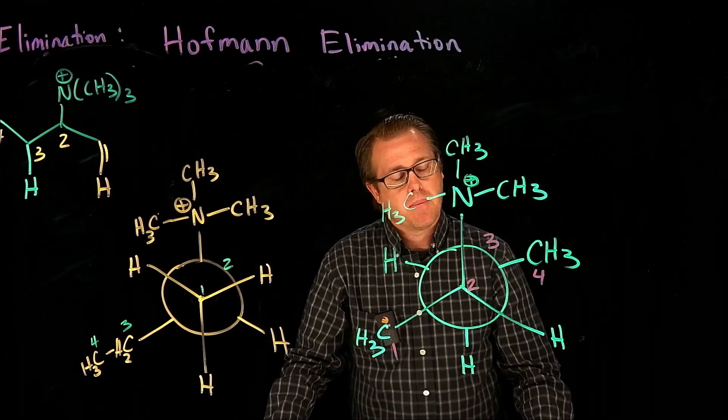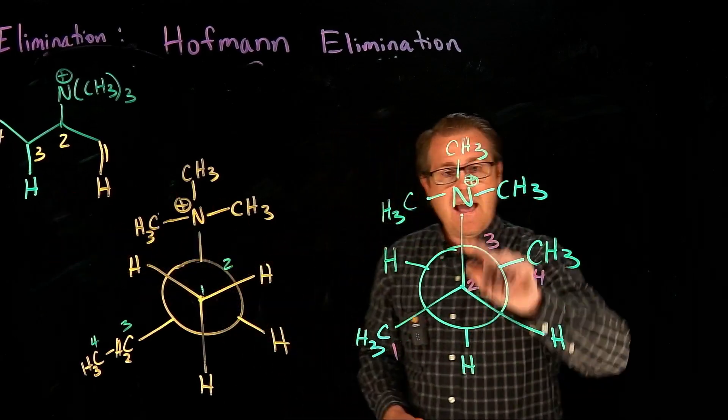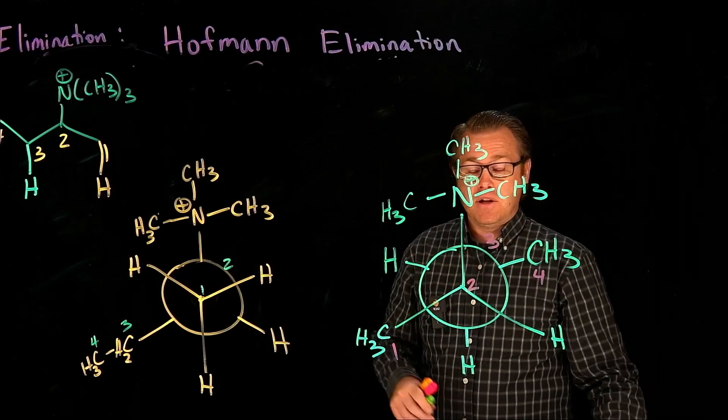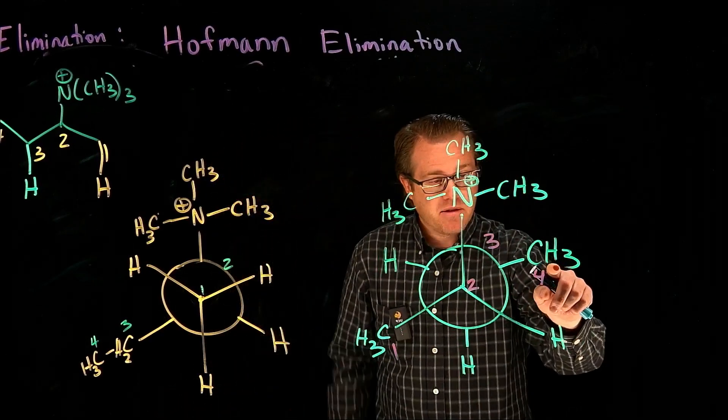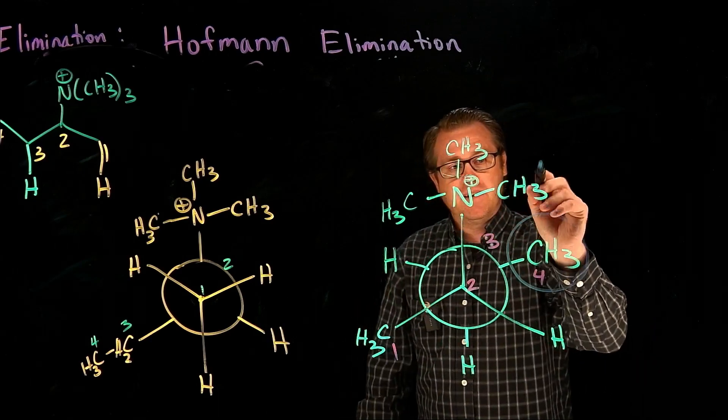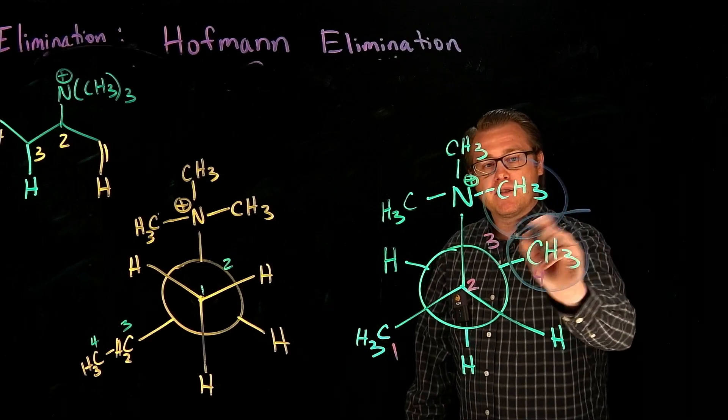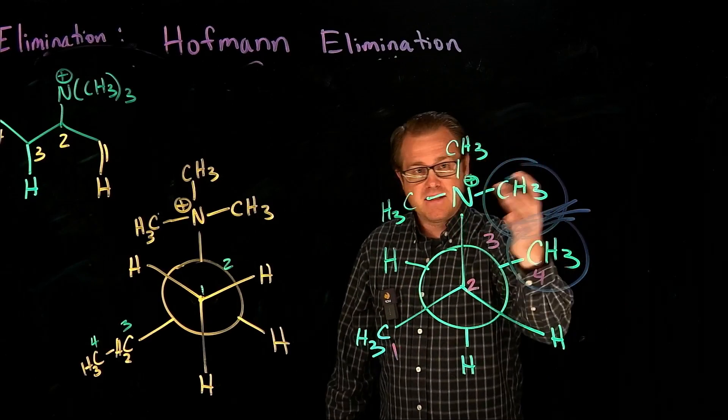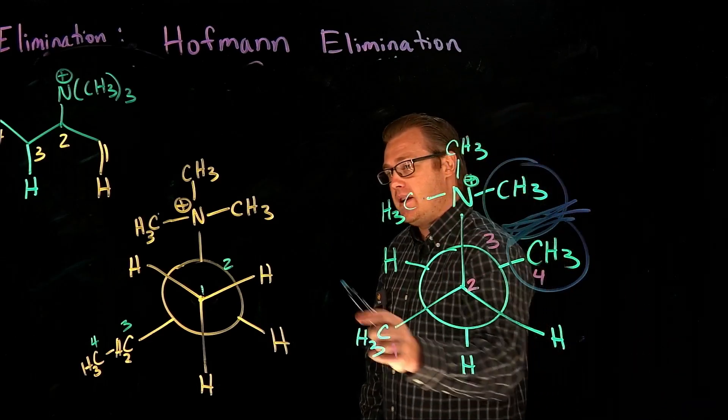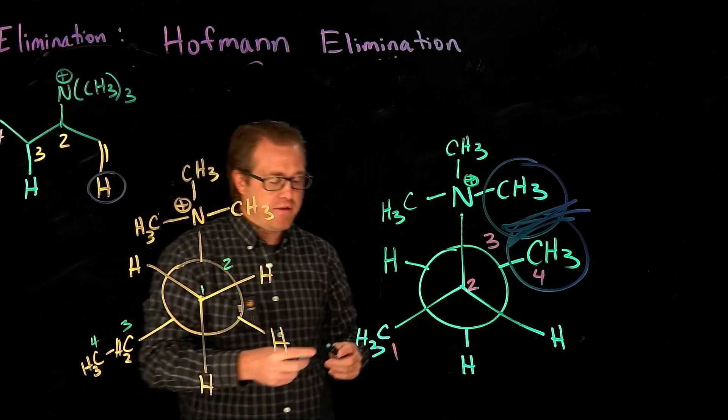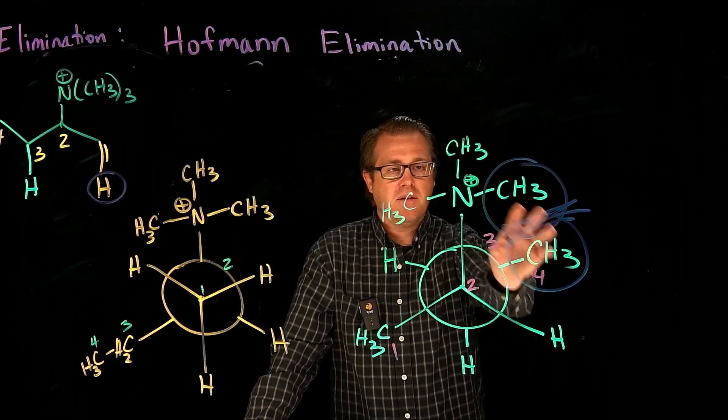Why is this one not so good? It has to do with the steric argument. In order to do that elimination, we have to get our Newman to get this hydrogen anti to the leaving group. But when we do that rotation around the carbon 2 and carbon 3 bond, we're going to have this methyl group which is bulky, and the quaternary ammonium salt is very bulky. We're going to have some steric clash that prevents this or increases the energy of this conformation so much that it's just not favorable. This is the favorable conformation, and so this hydrogen is the one that's going to be preferred. The reason why Hoffman elimination gives you the products that they do is based off of a steric argument.